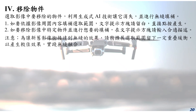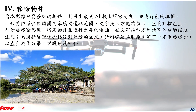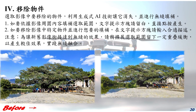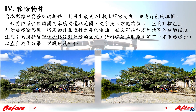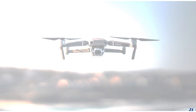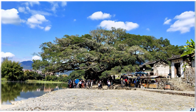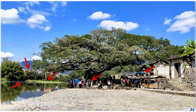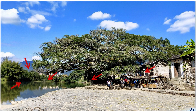选取影像中要移除的物件，利用生成式 AI 技术让它消失，并进行无缝填补。1. 如要依据影像周围内容填补选取区域，文字提示方块请留白，直接点按产生。2. 如要移除影像中特定物件并进行想要的填补，仅在文字提示方块输入合适的描述。图中示范分批删除物件与填补，选取适当范围后，文字输入提示方块留白，直接点按产生。